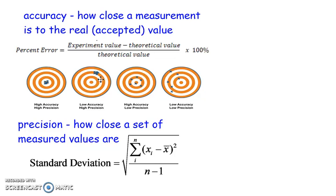The second one, the values are still precise because they're very close together, but they're not accurate because they're not in the center of the target.